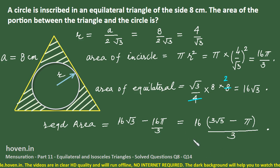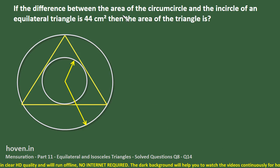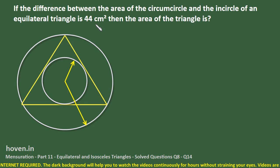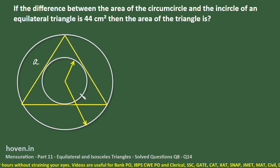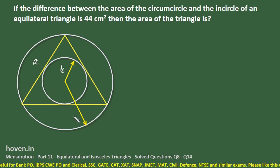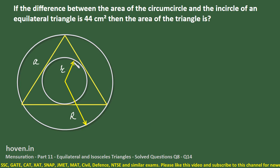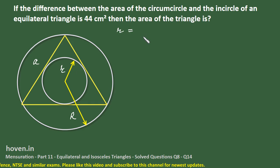Moving to the next question: if the difference between the area of the circumcircle and the incircle of an equilateral triangle is 44 square centimeters, then what is the area of the equilateral triangle? Let the side be A, the inradius be r, and the circumradius be R.